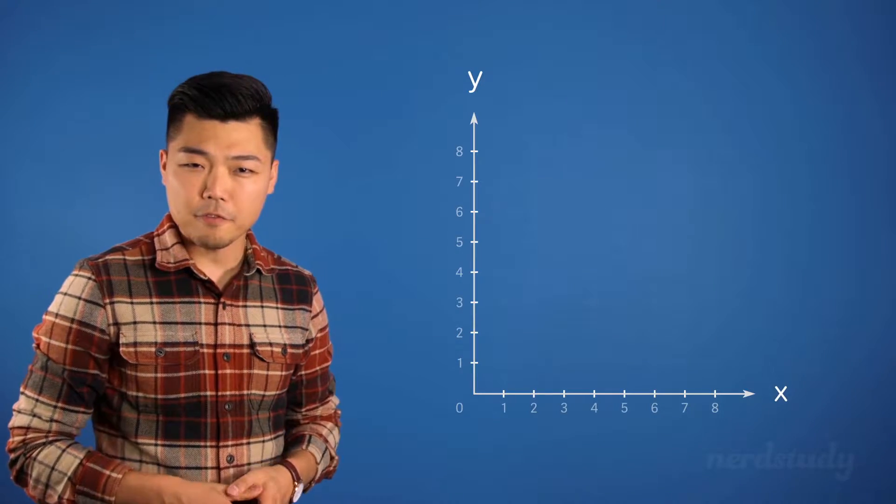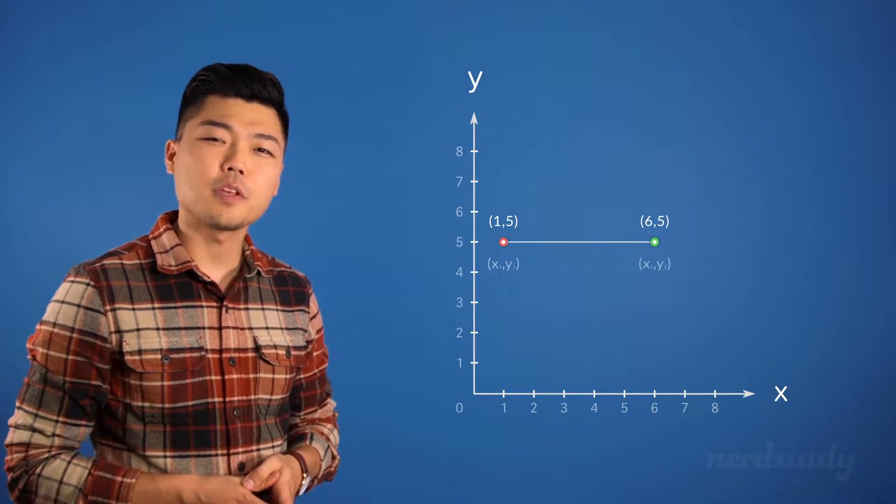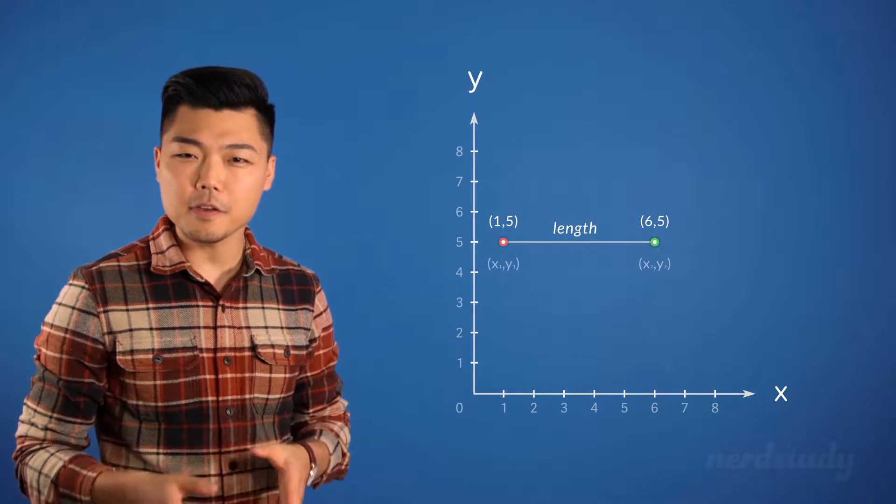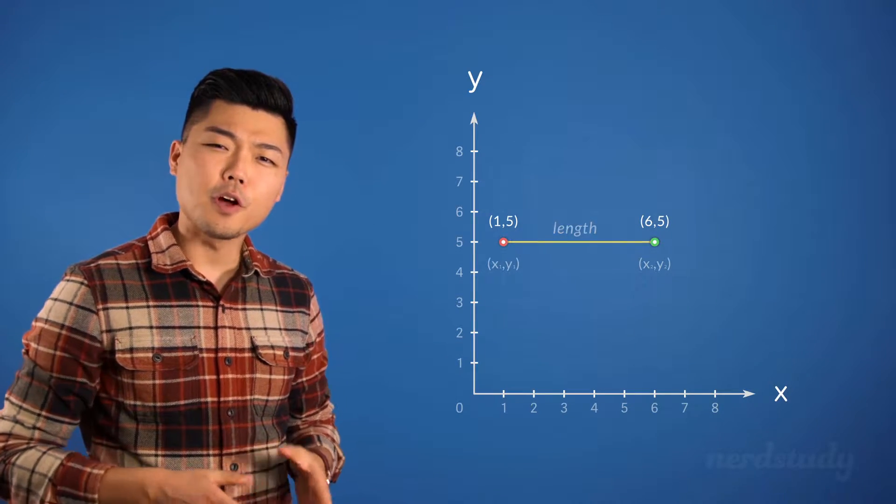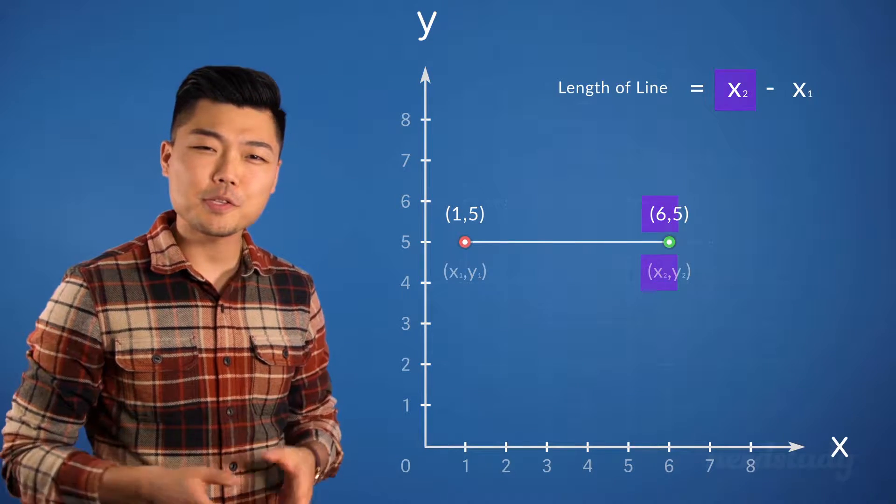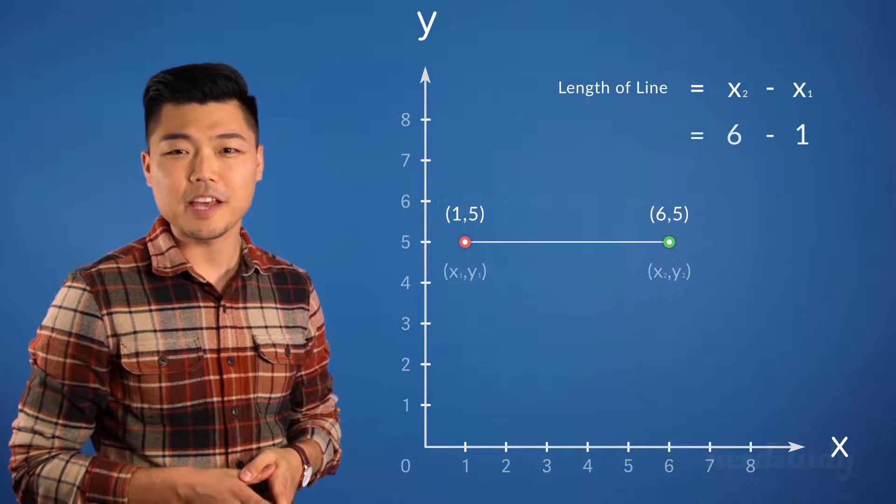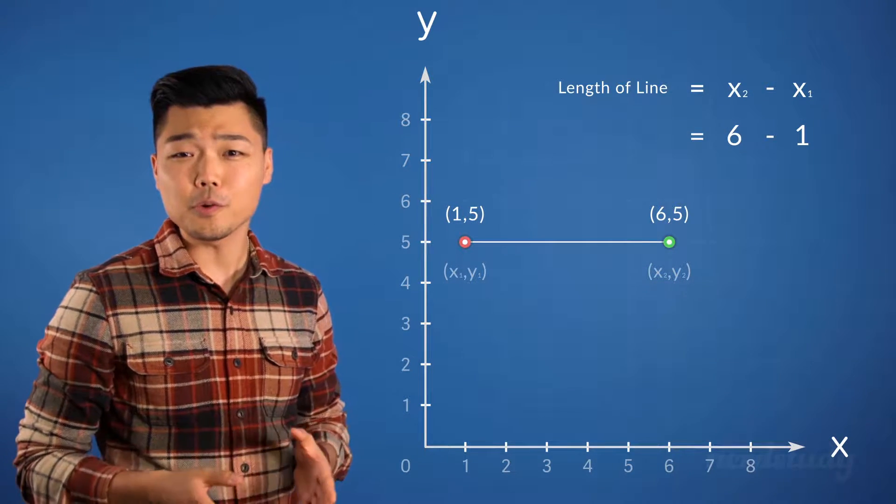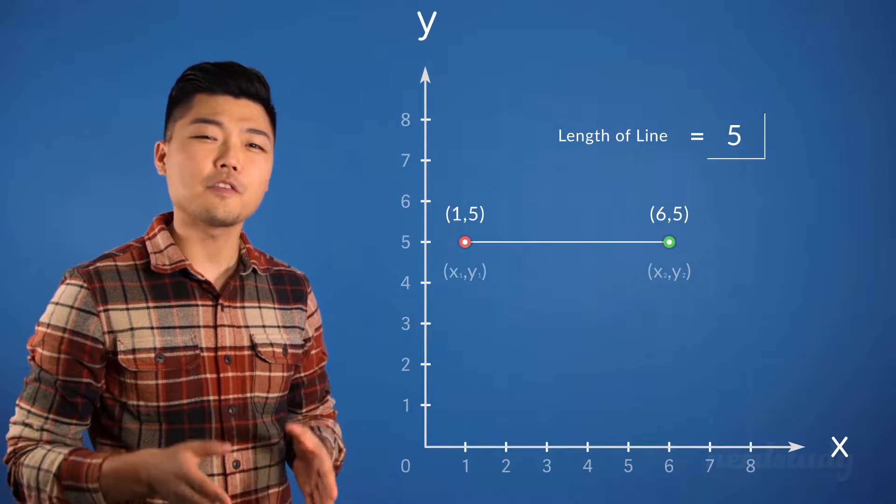Let's say I gave you a graph with a line like this. If you were asked to find the length of this line here, then all you would have to do is x2 minus x1. We'd get 6 minus 1 and we would know that the length is 5 units long.